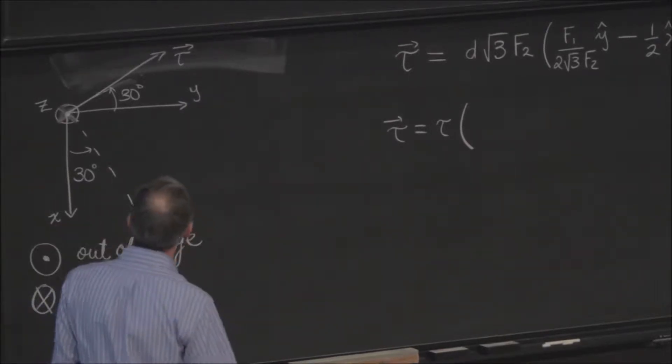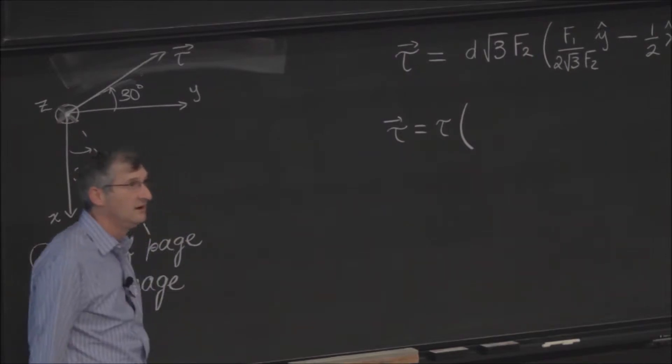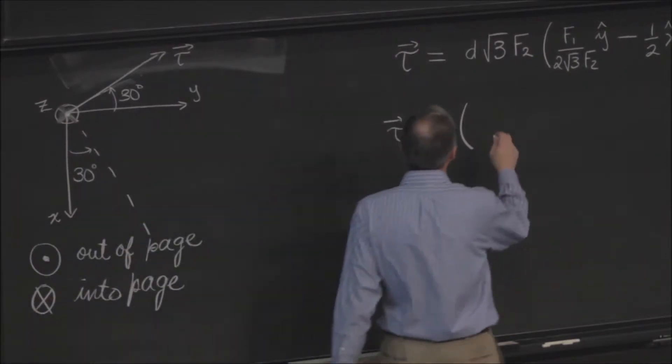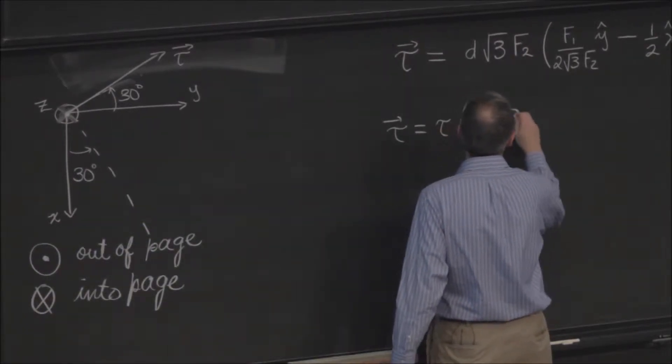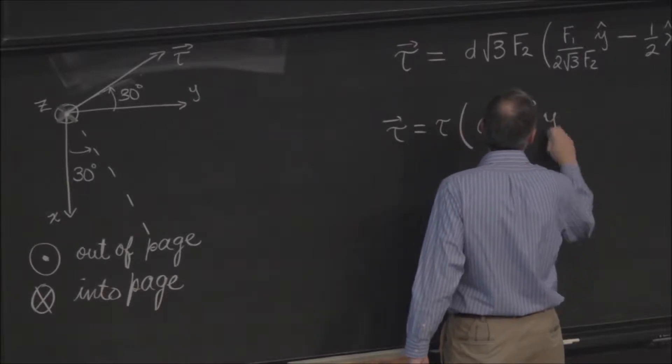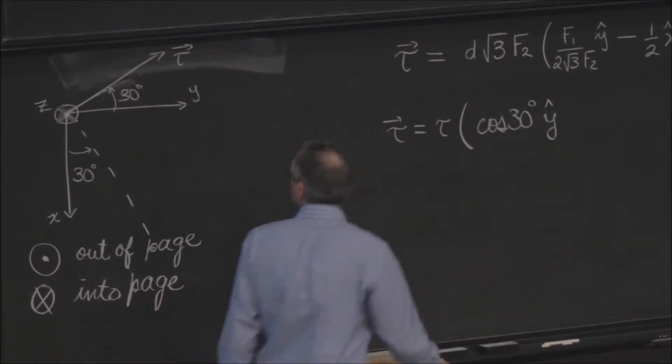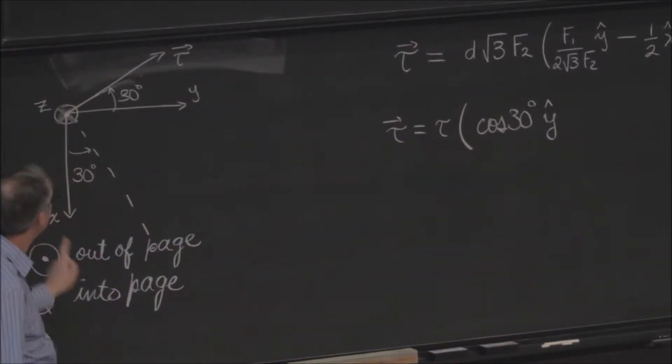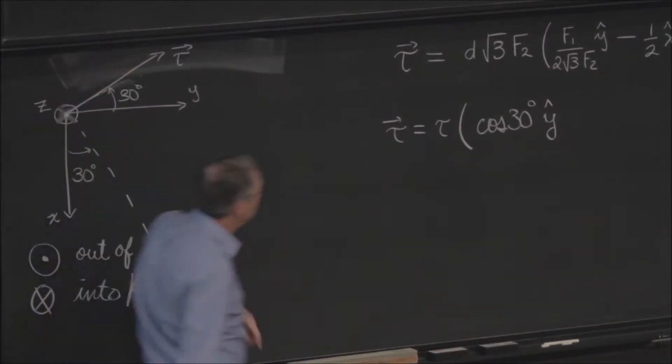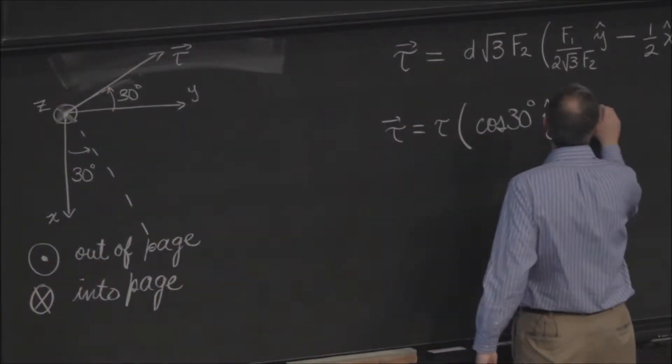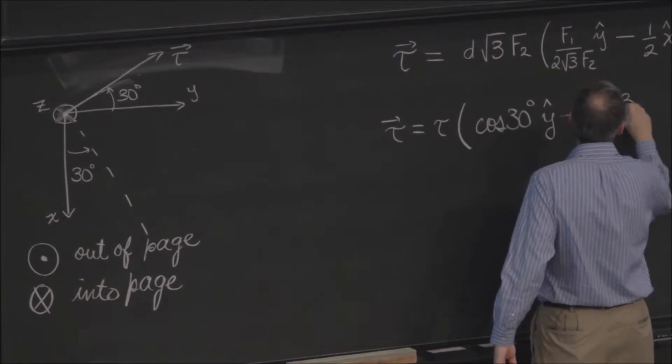The y component is how much? 30 degrees. And the x component is negative because positive x is this way. X component is minus the sine of 30 degrees.